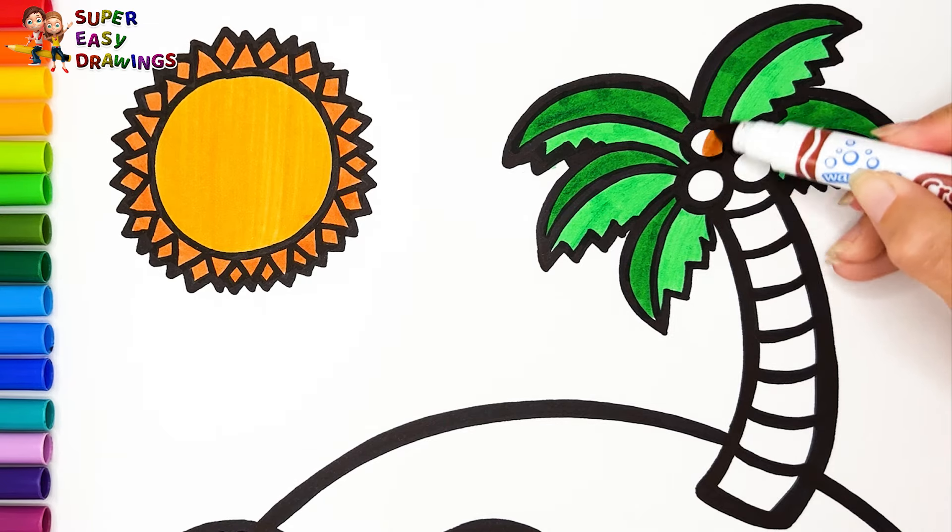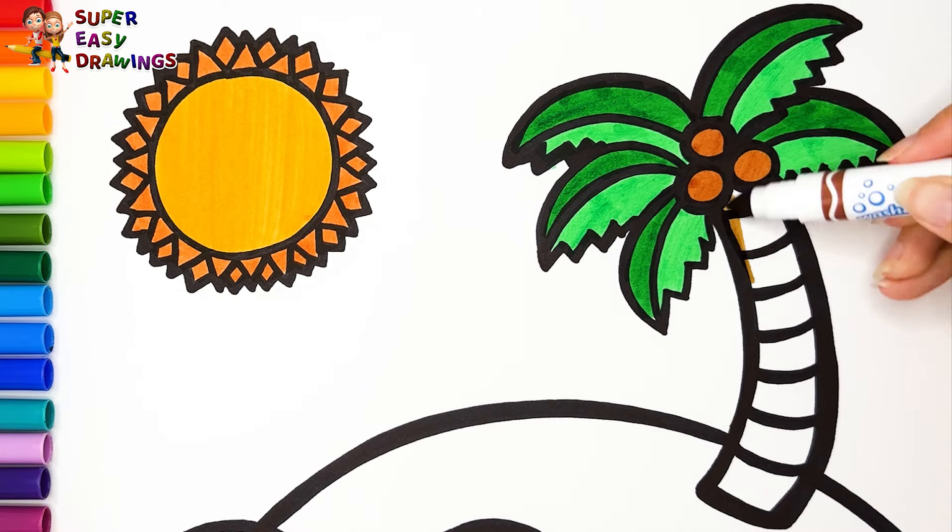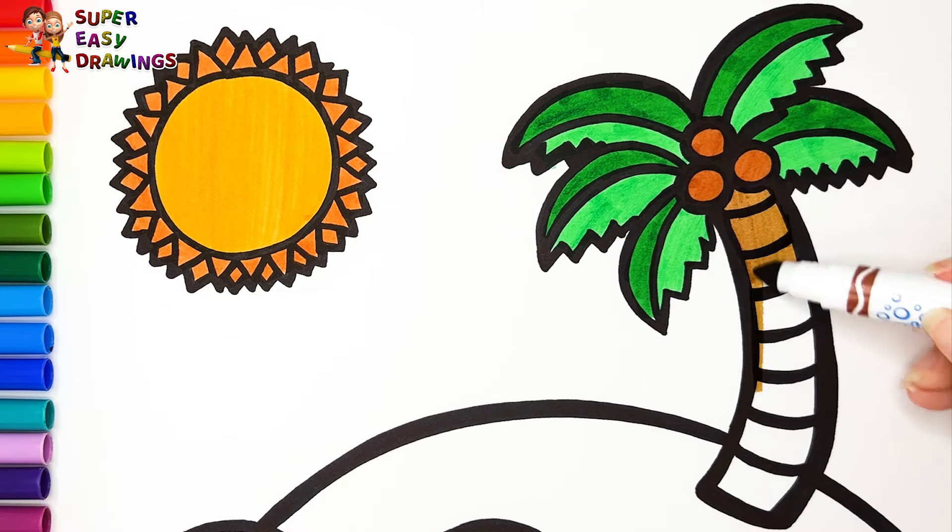I use this brown marker for the coconuts. Now I color the trunk with this dark brown marker.